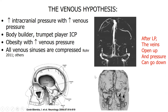The venous hypothesis is this: as pressure rises, the veins collapse, which raises pressure further in a vicious cycle. People who exert high abdominal pressure — like bodybuilders or trumpet players — can transiently increase venous pressure and spinal fluid pressure. In IIH, the venous sinuses can be compressed, absent, atrophic, or blocked by arachnoid granulations, so we must examine them carefully.